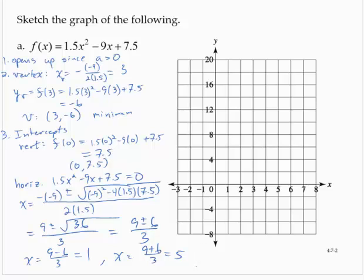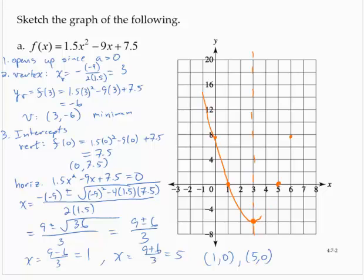The horizontal intercepts are (1, 0) and (5, 0). Putting it all together: the vertex is (3, −6), the vertical intercept is (0, 7.5), and using symmetry about the axis x = 3, we also have (6, 7.5). The horizontal intercepts at (1, 0) and (5, 0) are symmetric about that axis as well. We can now draw the curve through those points — that's f(x) = 1.5x² − 9x + 7.5.